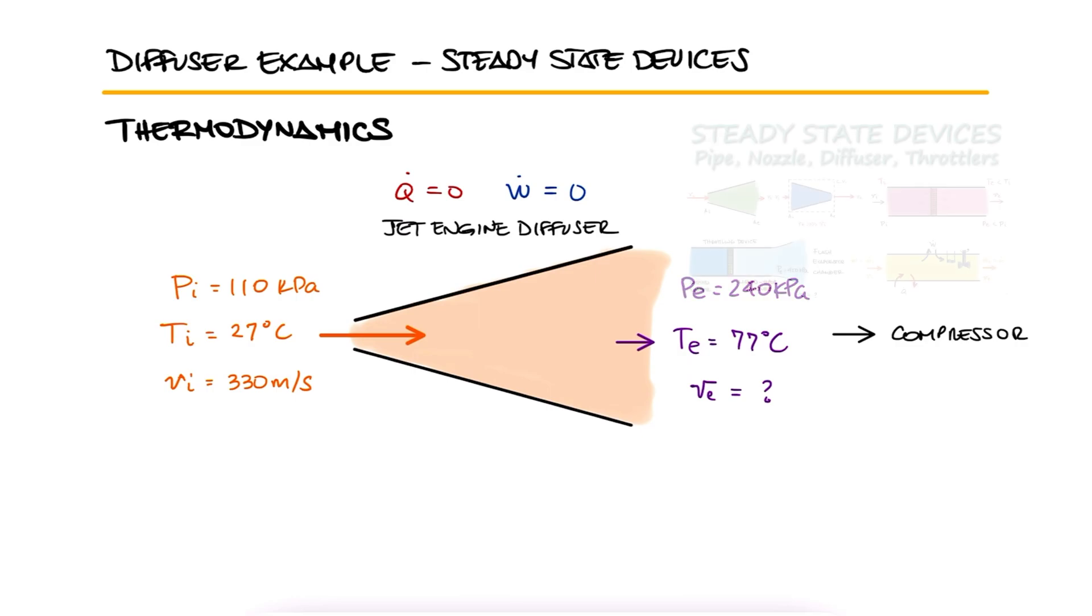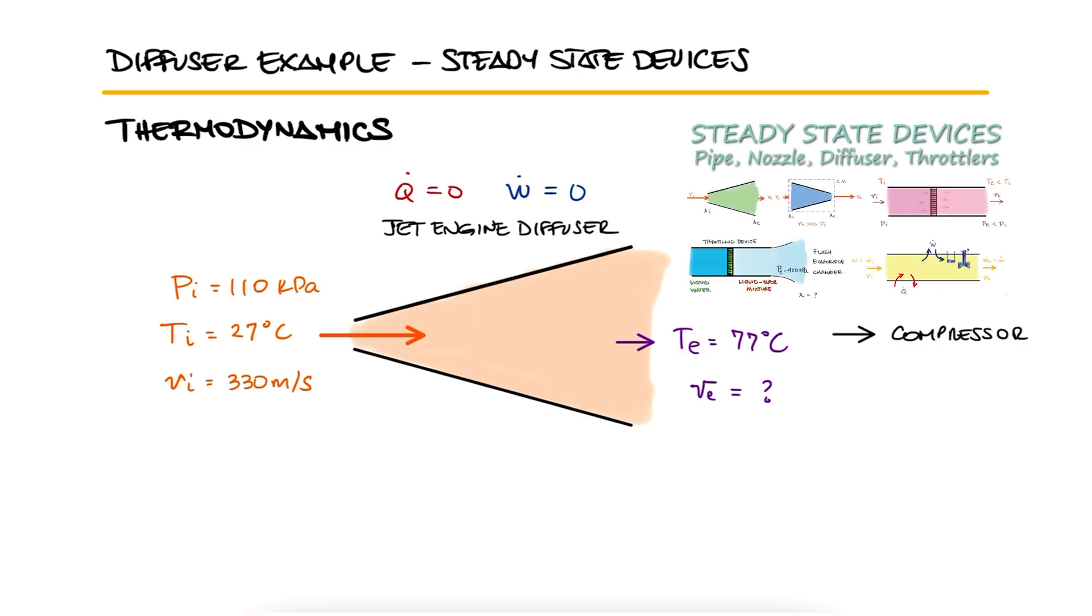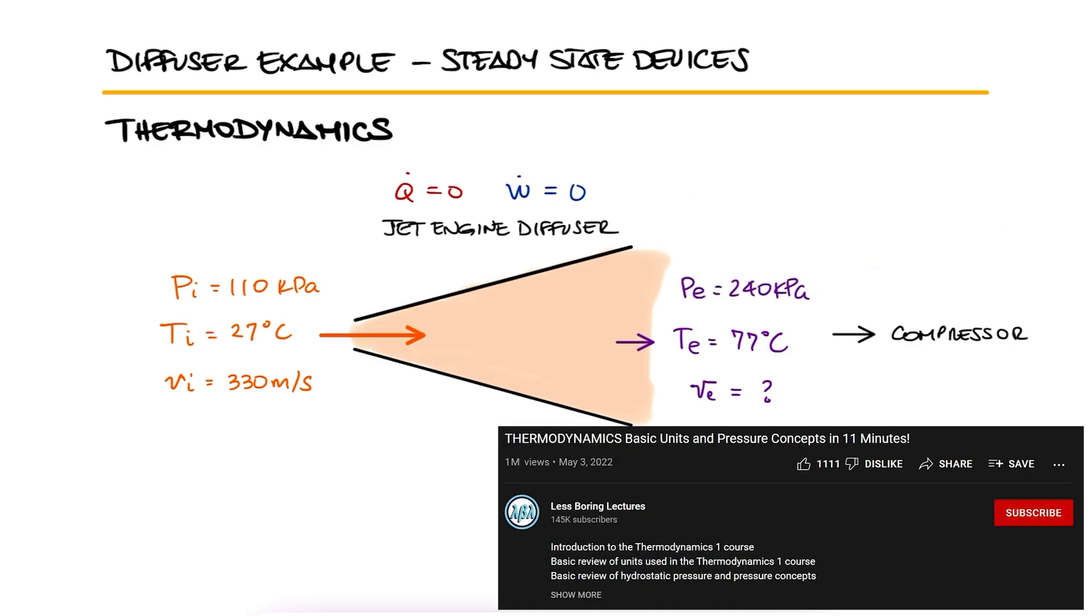This is the second example for the Pipe Flow, Nozzles, Diffusers, and Throttling Devices main lecture. The link to that 9-minute lecture and all the other lectures of the ThermoCourse are found in the description below.